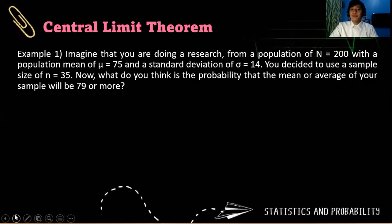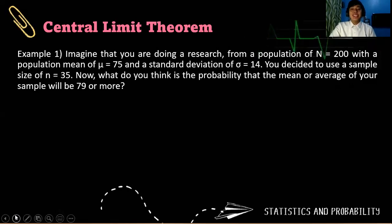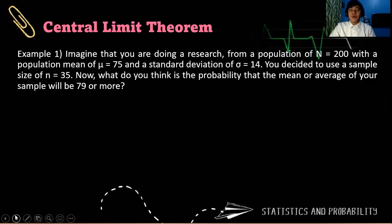Let's have example number 1. Imagine that you are doing a research from a population of size 200 with a population mean of μ equals 75 and a standard deviation of σ equals 14. You decided to use a sample size of n equals 35. So that guarantees a central limit theorem because our sample size is greater than 30.